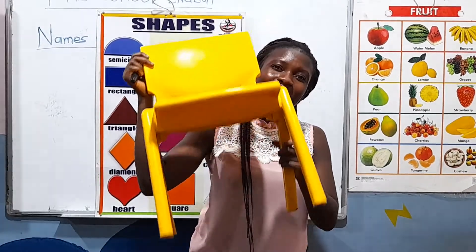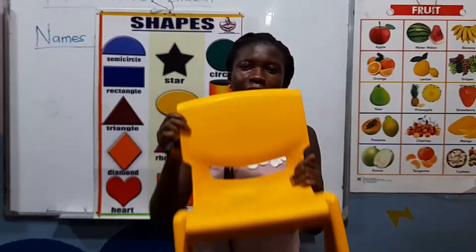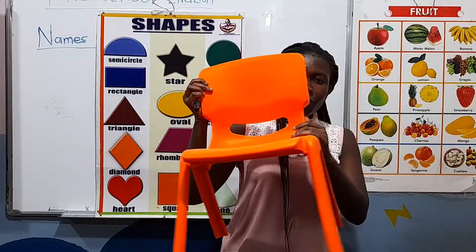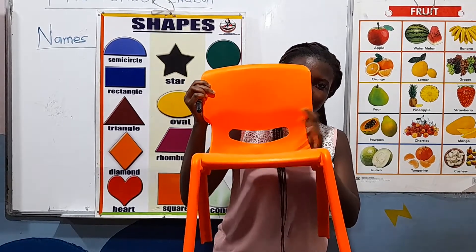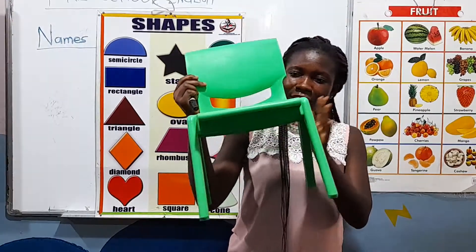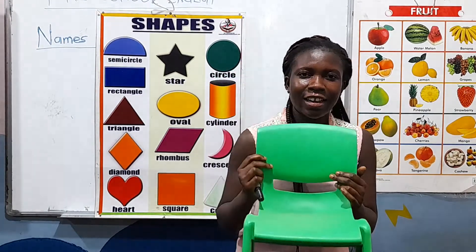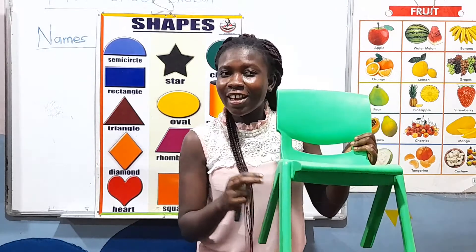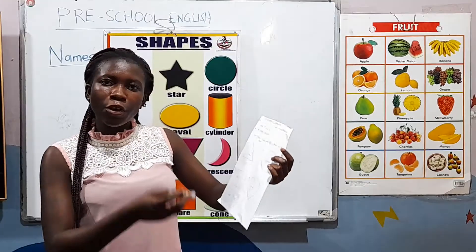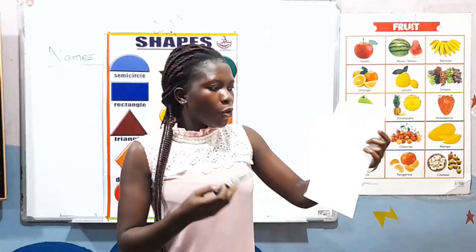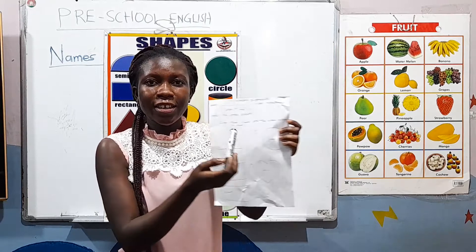We also have chairs here with different colors. This chair I'm holding has a yellow color. This chair also has an orange color. And this chair here has a green color.